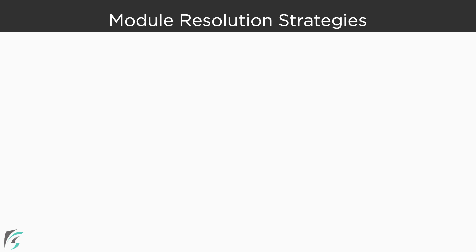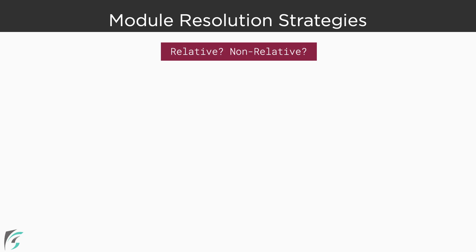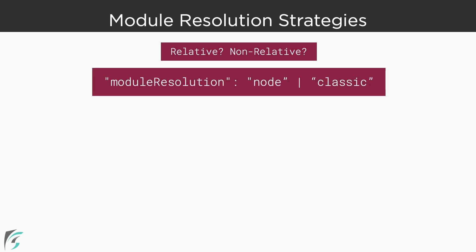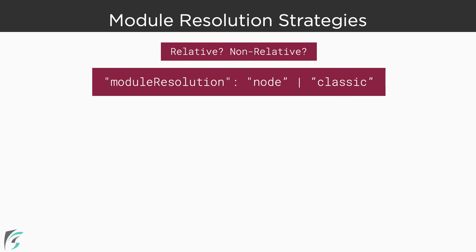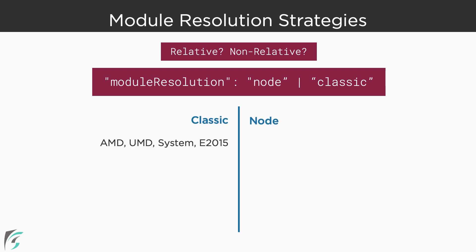Module resolution strategies. TypeScript resolves the location of the module by first checking if they are relative or non-relative references. After that, it attempts to locate the module using the configured module resolution strategy. We can set the module resolution strategy using the moduleResolution compiler option. The two possible values are classic and node. Classic mode is available primarily for backward compatibility. Classic mode is the default resolution strategy if we are emitting AMD, UMD, System, or ECMAScript 2015 modules. For CommonJS modules, node is the default resolution strategy.